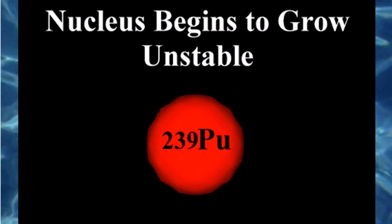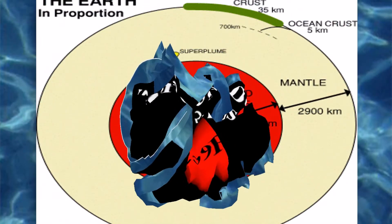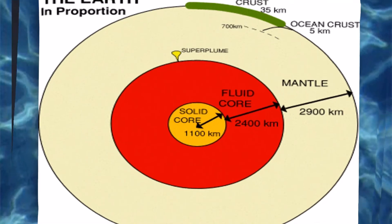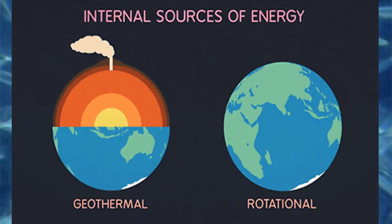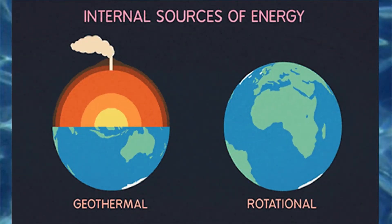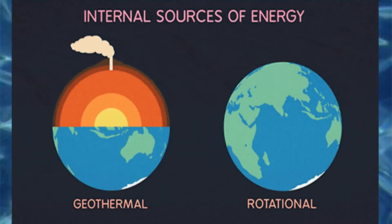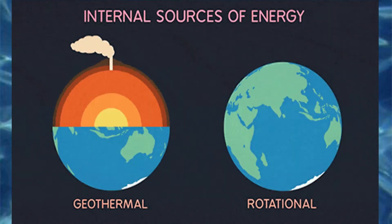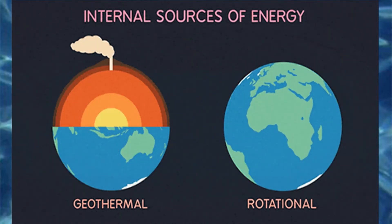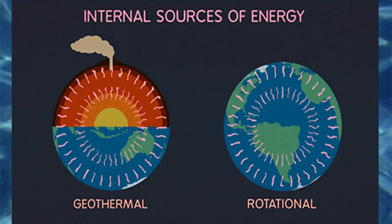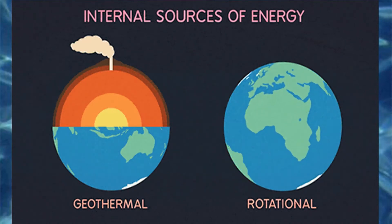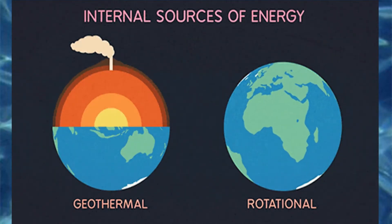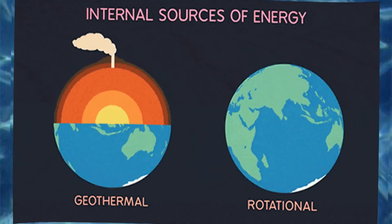Although the Earth is about 4.5 billion years old, some heat remains from the accretionary process during its formation, because fragments of Earth materials were heated to very high temperatures by impact during formation of the planet. Earth materials have relatively low thermal conductivity, so significant heat has been retained from the early stages of Earth history. A more important source of heat is the natural, spontaneous radioactive decay of unstable isotopes of elements distributed throughout the Earth.